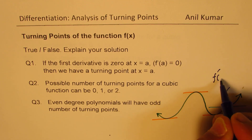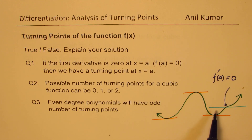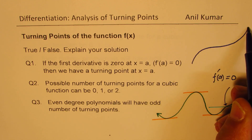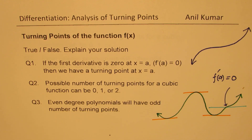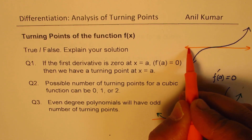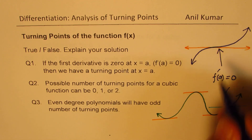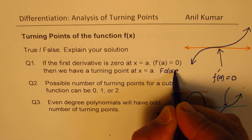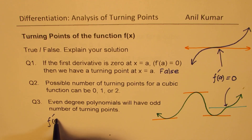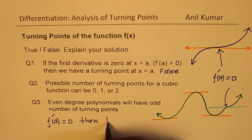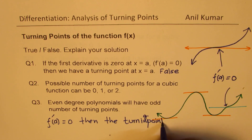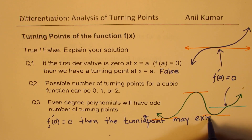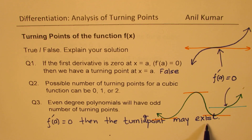Here, the derivative of the function — let's say this point is at x equals a — is equal to zero, since the tangent will be horizontal. It's kind of like a cubic function. So at this point, what we have is a horizontal tangent line but we do not have a turning point. Therefore, this first statement is false. That means if f'(a) equals zero, then a turning point may exist — you cannot be sure about it.